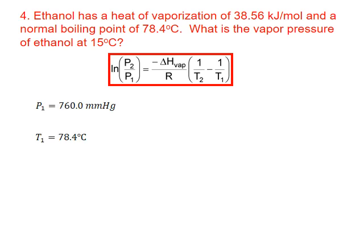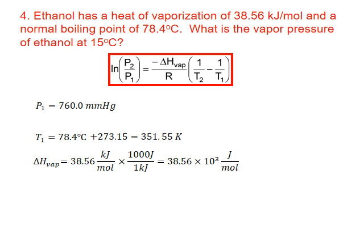Our first data point will be the normal boiling point of ethanol: 760 millimeters of mercury and 78.4 degrees Celsius, converted to kelvin by adding 273.15. The enthalpy of vaporization is 38.56 kilojoules per mole, converted to joules per mole by multiplying by a thousand. R is the ideal gas constant, 8.314 joules per mole kelvin. Our second temperature is 15 degrees Celsius converted to kelvin by adding 273.15. Finally, we're solving for P2.